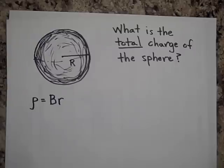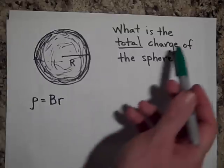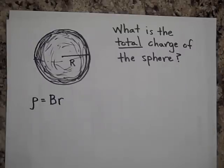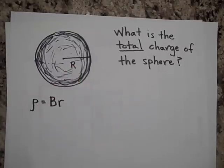So first, let's find out what is the total charge of the sphere. If we know this to be the case, and we know that this is a capital R for the radius of the entire thing, then what is, how much total charge is enclosed?